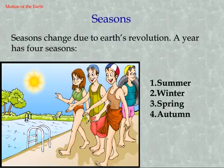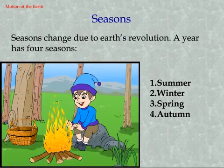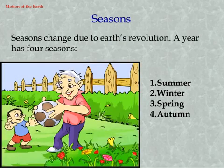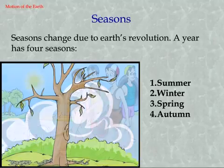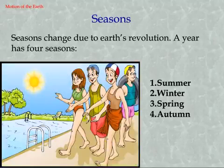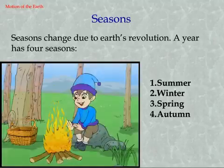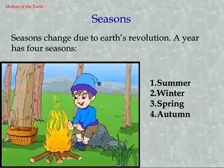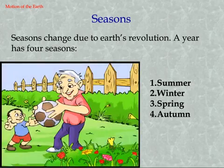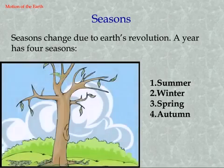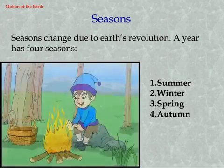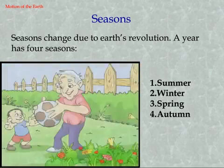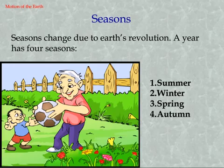Seasons change due to Earth's revolution. A year has 4 seasons: 1. Summer, 2. Winter, 3. Spring, 4. Autumn.